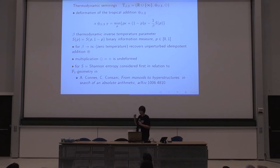When beta goes to infinity — so when you go to zero temperature — this recovers the unperturbed idempotent addition: it gives you back the minimum of x and y. Otherwise it gives something different in this one-parameter deformation. These kinds of things were considered in relation to the geometry of the field with one element by Kohn and Konsani, in the special case where the entropy functional is the Shannon entropy.